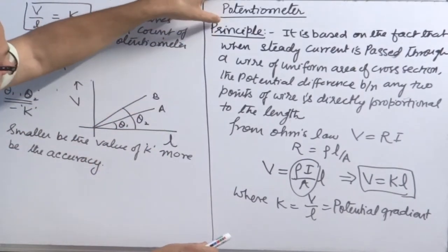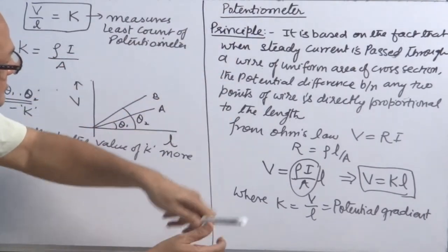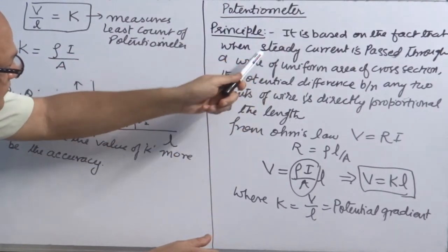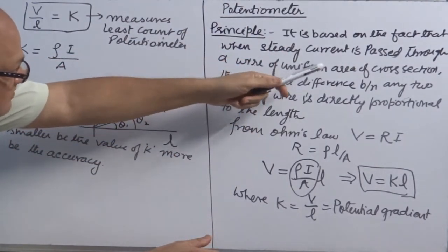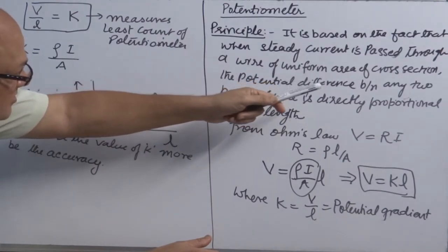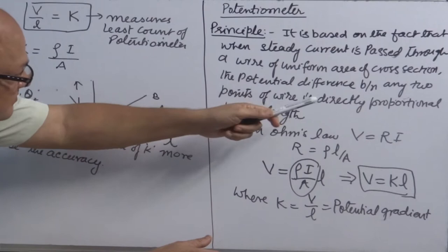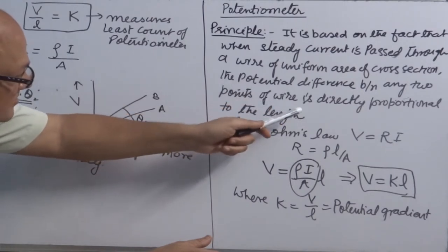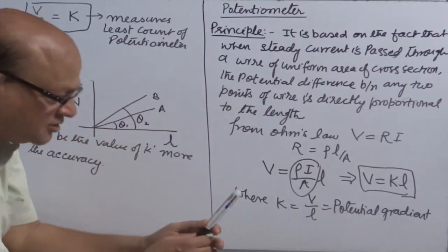Principle of potentiometer is based on this fact. If you are keeping steady current passed through a wire, a uniform area of cross section, the potential difference between two points of the wire is directly proportional to length.